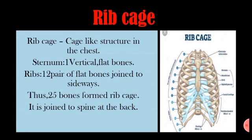The cage-like structure in the chest is called the rib cage. In the chest, there is one vertical flat bone called the sternum. 12 pairs of flat bones called ribs are joined to it sideways. These 25 bones form the rib cage, and it is joined to the spine at the back.